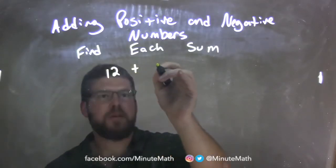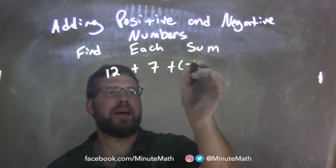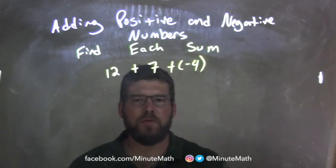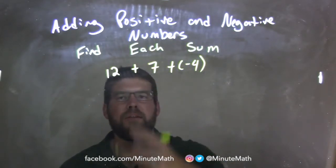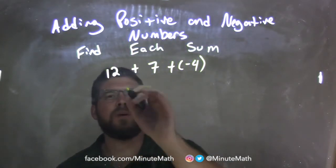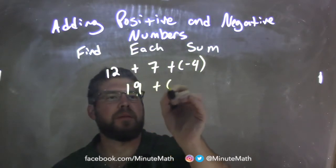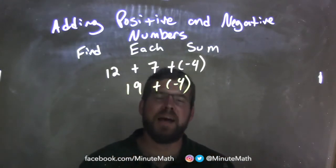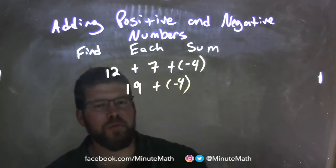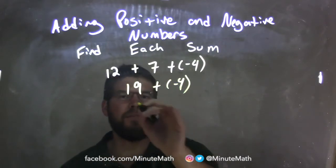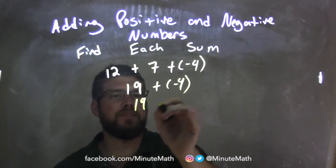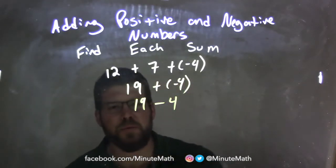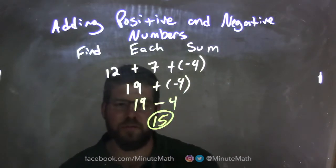12 plus 7 plus a negative 4. They're all addition, so we add left to right. 12 plus 7 comes out to 19. Then we bring down the negative 4. Adding a negative is the same thing as subtraction, so 19 minus 4. And 19 minus 4 comes out to be 15. There's our final answer.